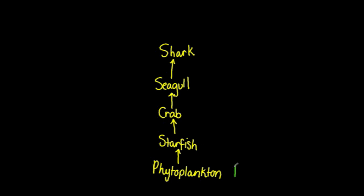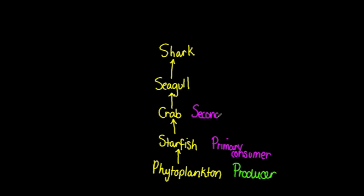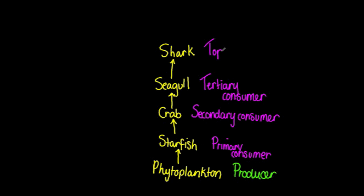So let's see if you managed to remember. The phytoplankton are the producers — the first trophic level. The starfish were the primary consumers, the crab the secondary consumers, the seagull the tertiary consumers, and the shark — as I mentioned earlier — is a quaternary consumer, sometimes known as a top predator.